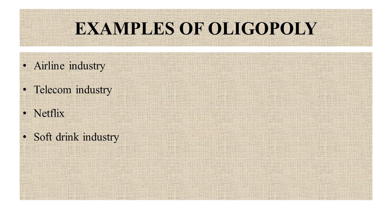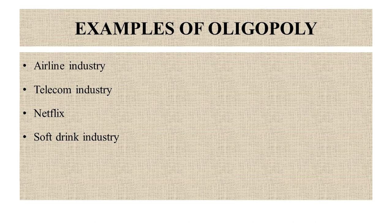Let's discuss examples of oligopoly. In the airline industry, many regions are dominated by a few major carriers. For example, in the United States, American Airlines and Delta Airlines control a significant portion of the market. These airlines often compete on routes, fares, and services. However, due to high barriers to entry such as regulatory requirements and significant capital investment, new competitors find it very difficult to enter the market and establish themselves.